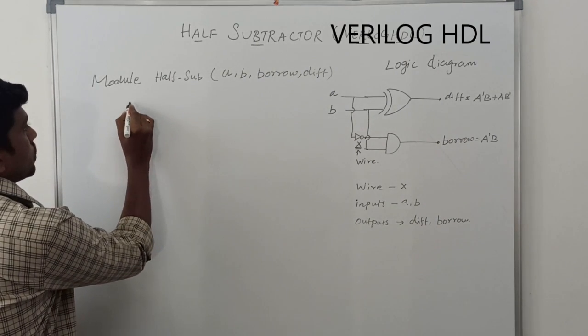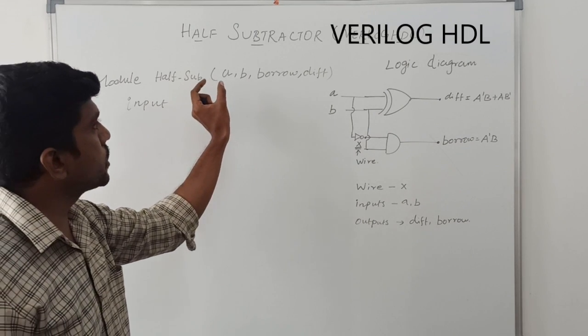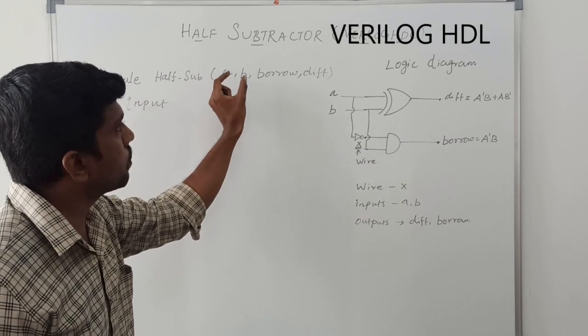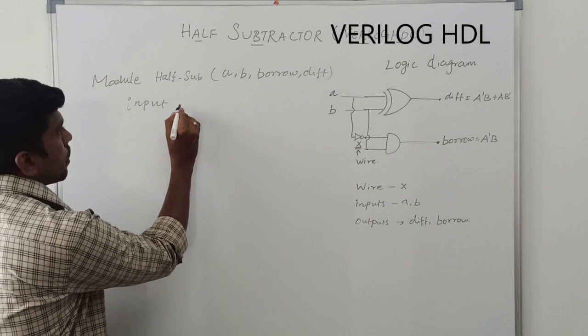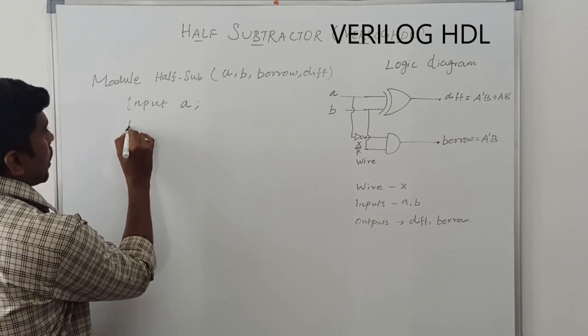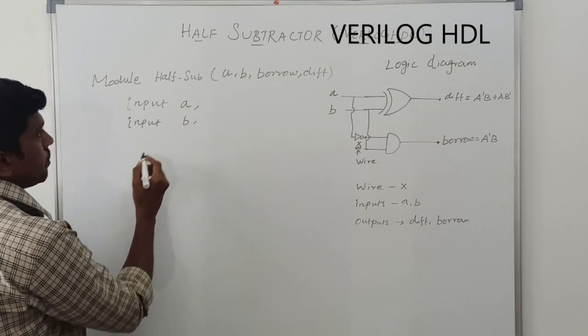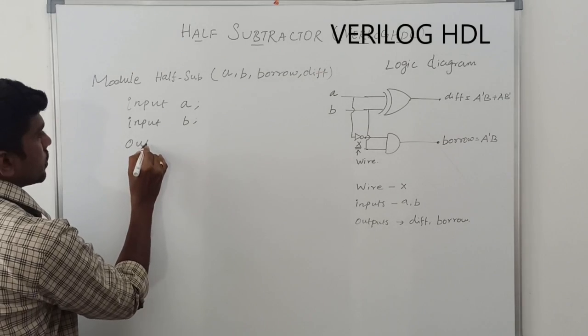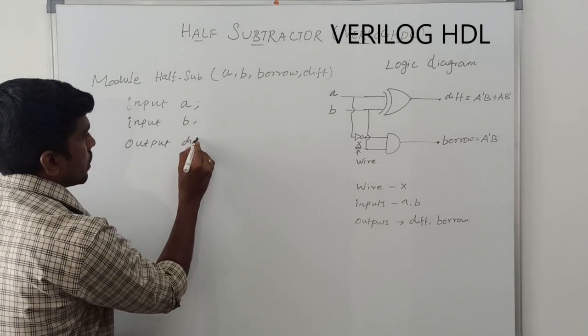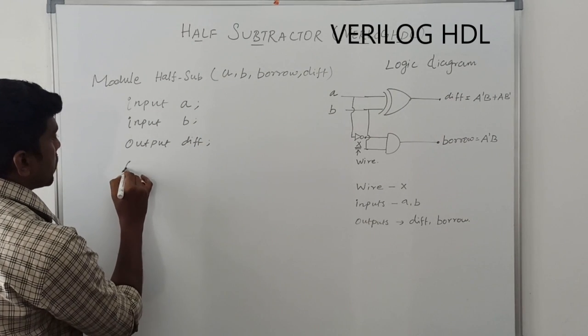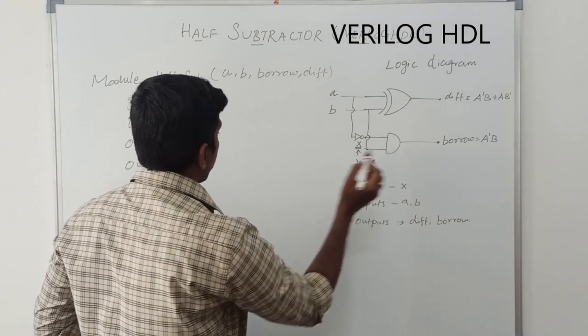Now, you assign among these four variables, which two variables are used in input, which two variables are used in output. Inputs are A and second input is B. Then, output. The first output is difference.